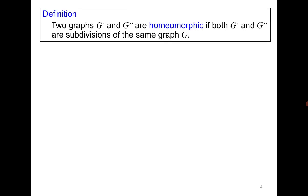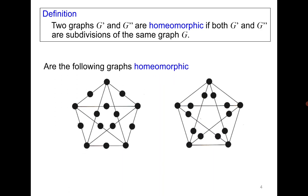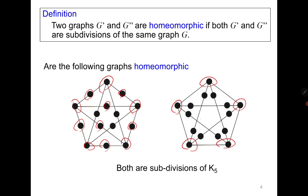Two graphs are homeomorphic if they are both subdivisions of the same graph. Consider this example: try by yourself first. You can observe that both graphs are subdivisions of K5, because there are only extra degree-2 vertices introduced by subdividing edges of K5. The five vertices of degree 4 are common in both graphs, and therefore they are subdivisions of K5 and hence homeomorphic.